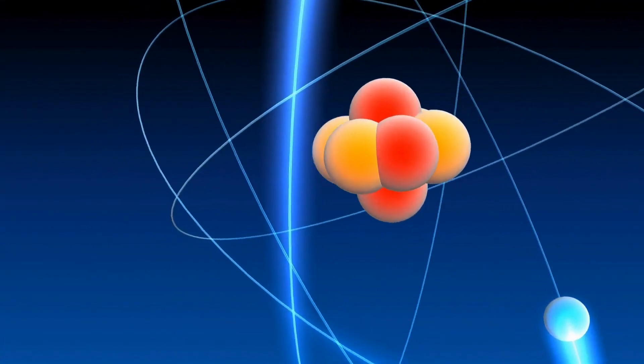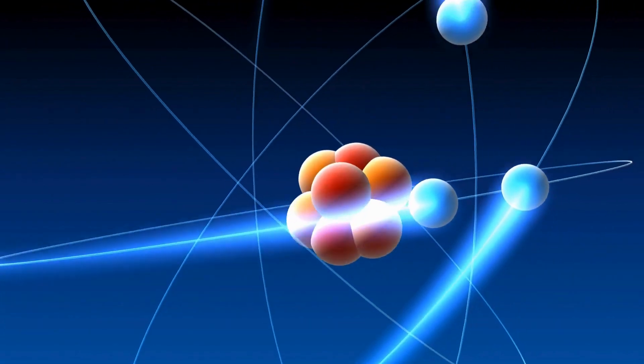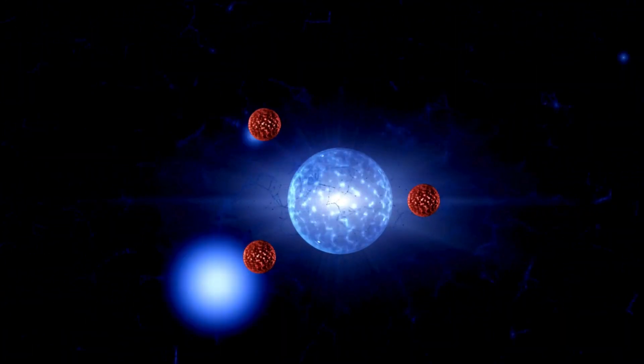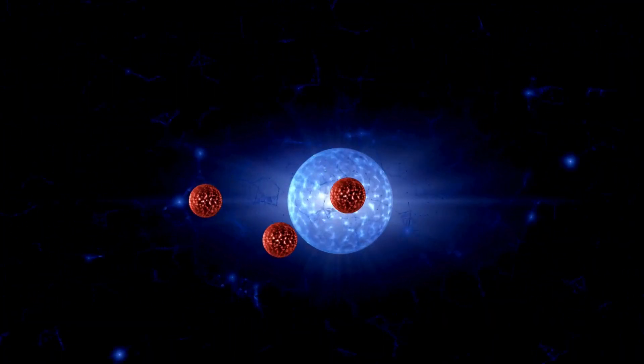At the atomic level, particles behave the same way. If you know where an electron is, you can't know how fast it's moving. And if you know how fast it's moving, good luck figuring out where it is.